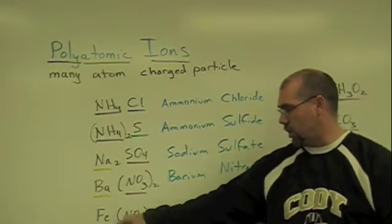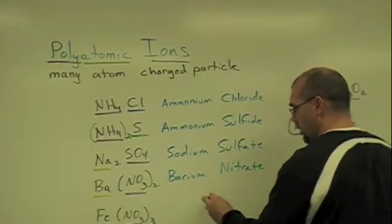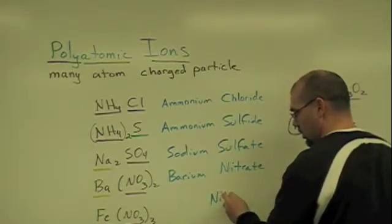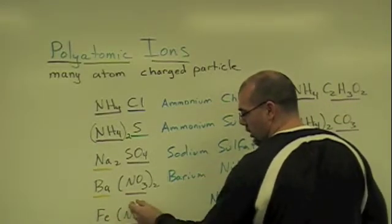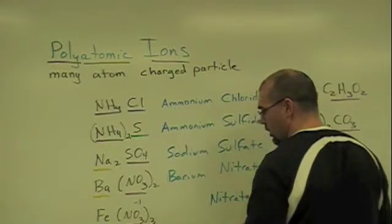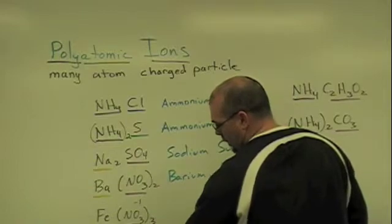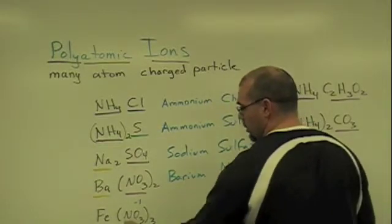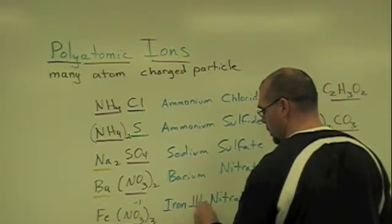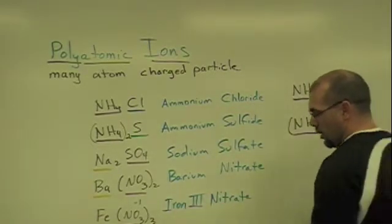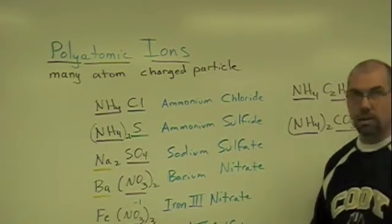Now, when we start involving the orange ones, those transition or heavy metals that require roman numerals, now we have a different situation. I can write its name. I know that's nitrate, but I need to figure out the charge of iron. So I do minus one times three is negative three, canceled out by plus three. So this is iron. His charge is three. So all we really did was use the orange's rule and then list the name of the polyatomic ion.